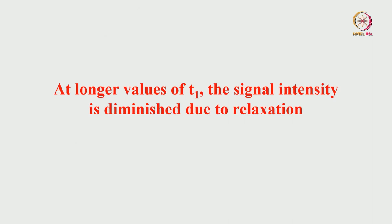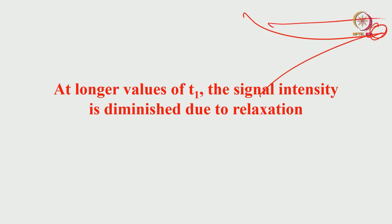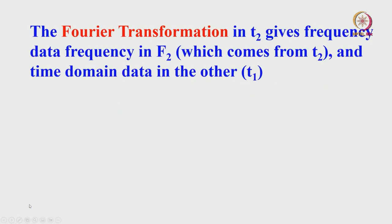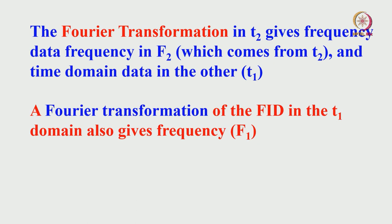At longer t1 values the signal completely diminishes because the spin is simultaneously oscillating and decaying exponentially due to relaxation. After a long time there is no signal at all. Now, we do a Fourier transformation in the t2 domain: we collect the signal in the t2 period and also have time-domain data in the t1 period. I can do Fourier transformation separately and independently in both domains. Doing Fourier transformation of the FID collected during t1 gives frequency f1, and doing it during t2 gives frequency f2.